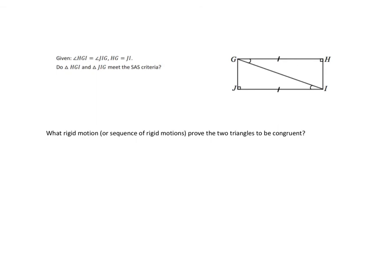Now the next question is interesting because it asks: what rigid motion, or again, sequence of rigid motions, prove the two triangles to be congruent? And really, there are multiple ways of doing this. You could perform a sequence of rigid motions, and there's probably a whole host of ways you could spin, reflect, translate.